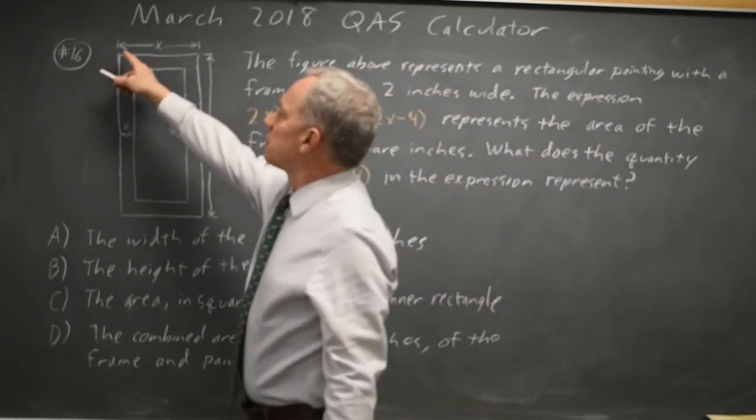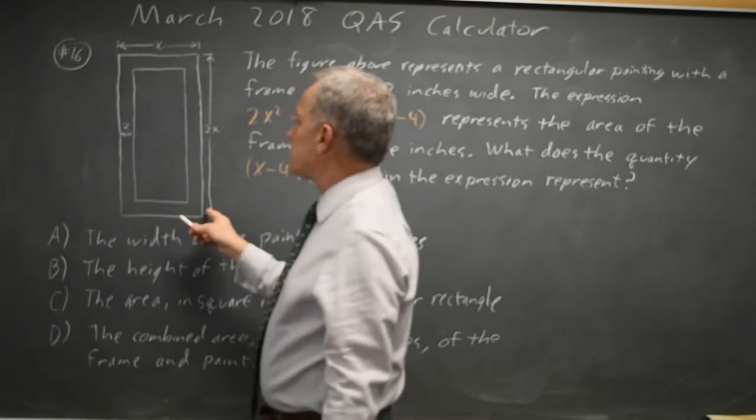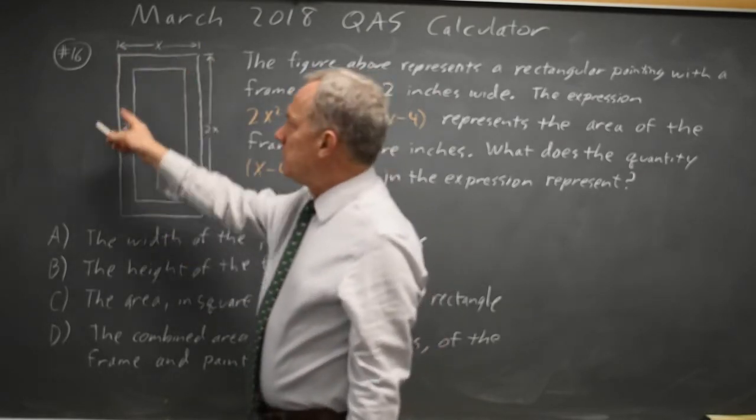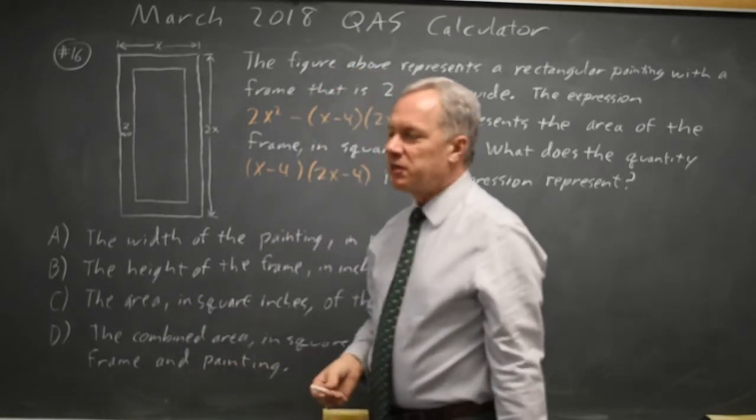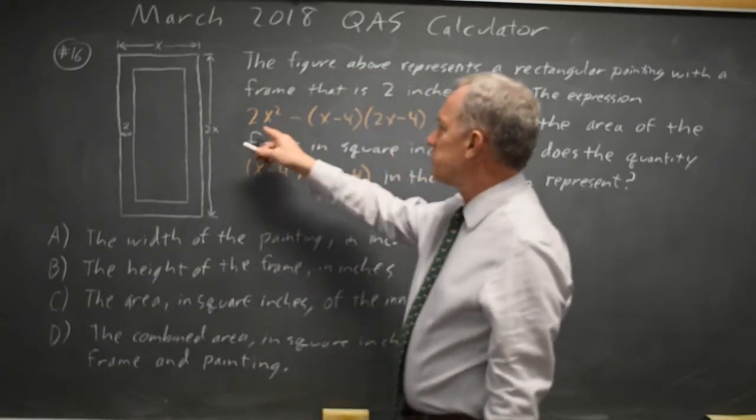If you look at the outside of the frame, it's x by 2x, so the area including the frame and the picture on the interior is x times 2x, which is 2x².